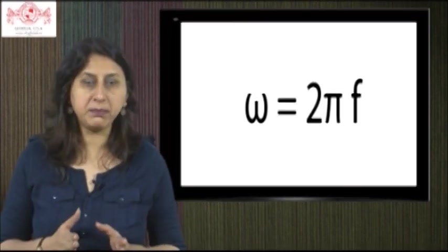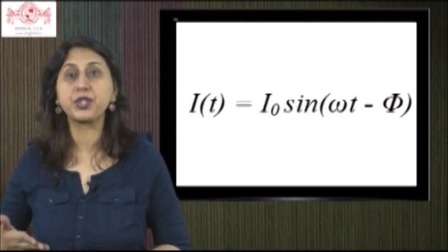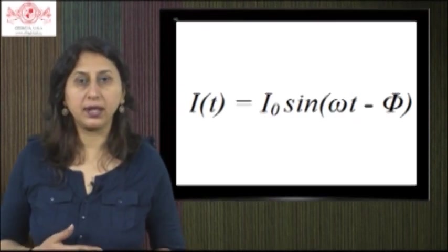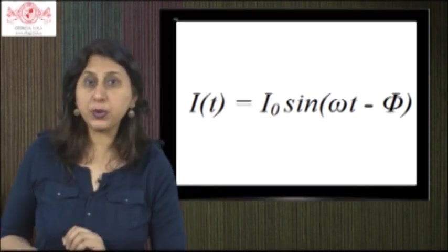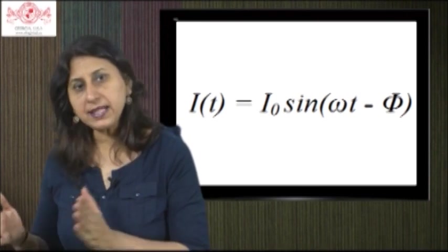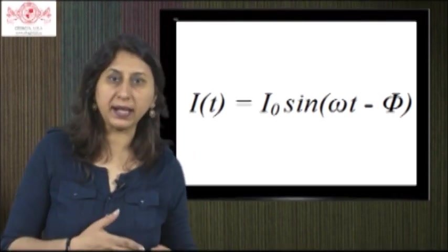After an initial transient time, an AC current will flow in the circuit as a response to the driving voltage source. The current will oscillate with the same frequency as the voltage source with amplitude I₀ and phase that depends on the driving frequency.